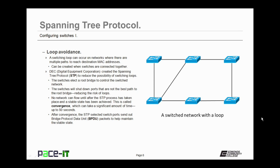No network traffic can flow until after the STP process has taken place and a stable state has been achieved. This stable state is called convergence, and it can take a significant amount of time with STP — up to 50 seconds. After convergence, the STP-selected switch ports send out bridge protocol data unit packets, or BPDU packets, to help maintain the stable state.